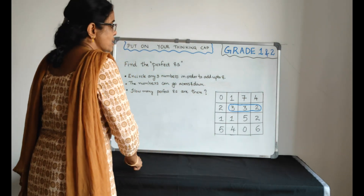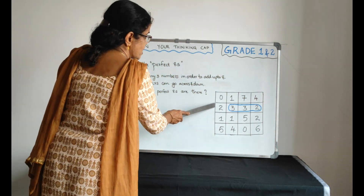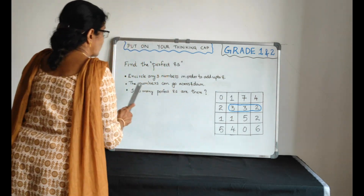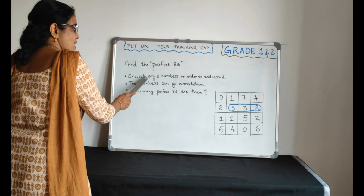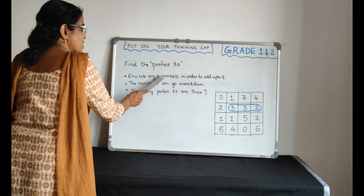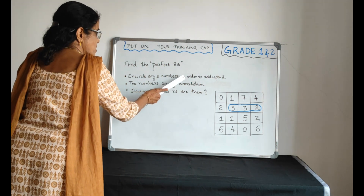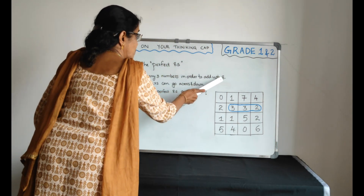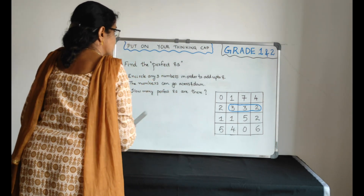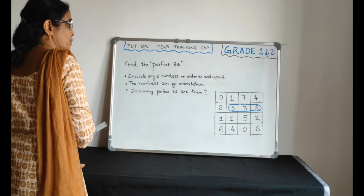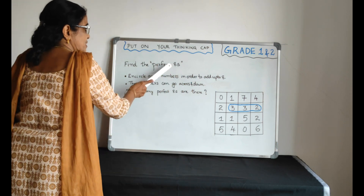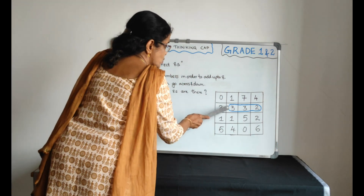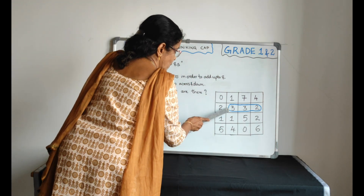Here the numbers are arranged in boxes. Encircle any 3 numbers in order to add up to 8, and you are calculating perfect 8s. Here is one example.